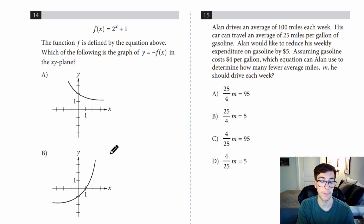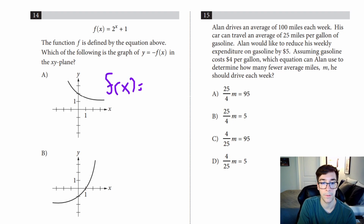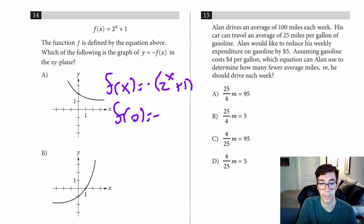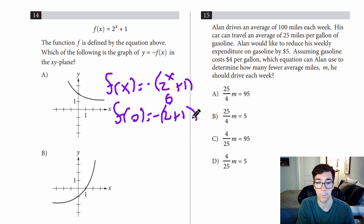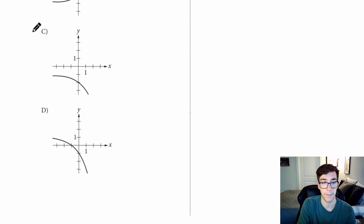Number fourteen: the function f is defined by the equation above; which of the following is the graph of Y equals negative f of X? Basically, whatever I put in, I make the output negative. So negative f of X equals negative 2 to the X plus 1. Testing X equals 0: negative 2 to the 0 is negative 1, plus 1 gives negative 2. So we get the point (0, negative 2). Looking at the graphs: not A, not B — C has that point, D does not. So it's C.